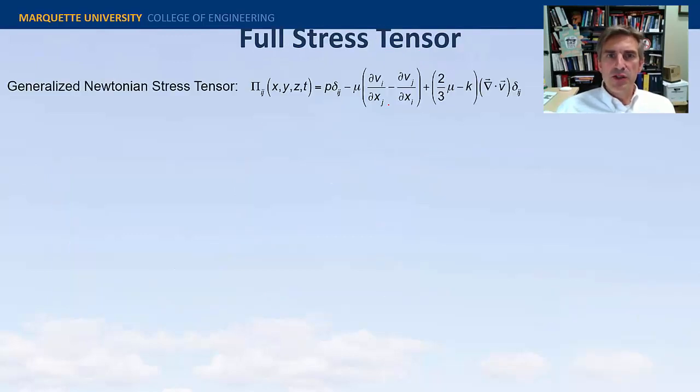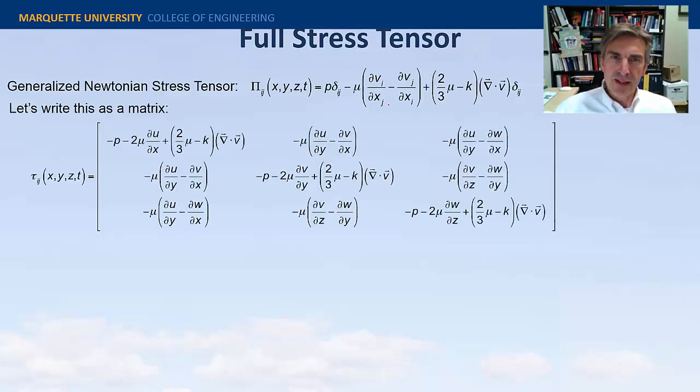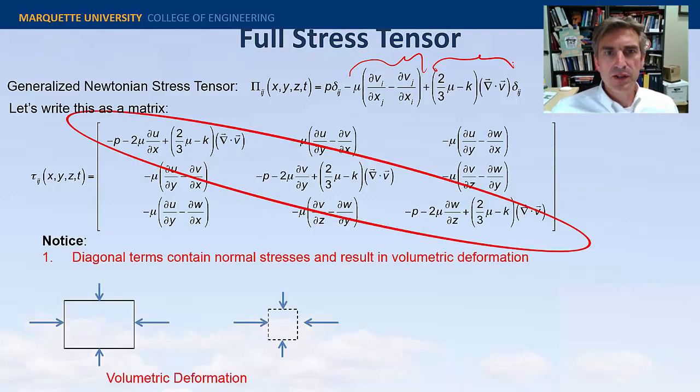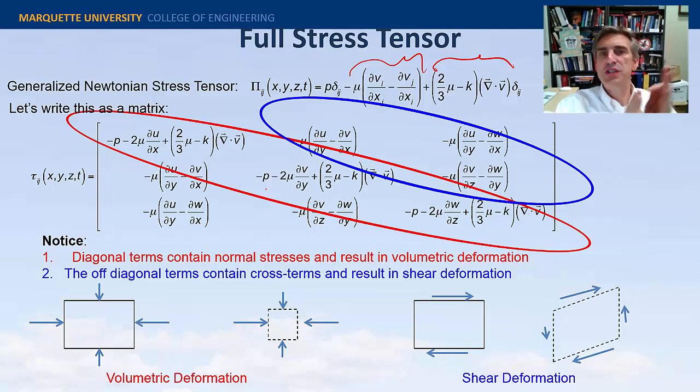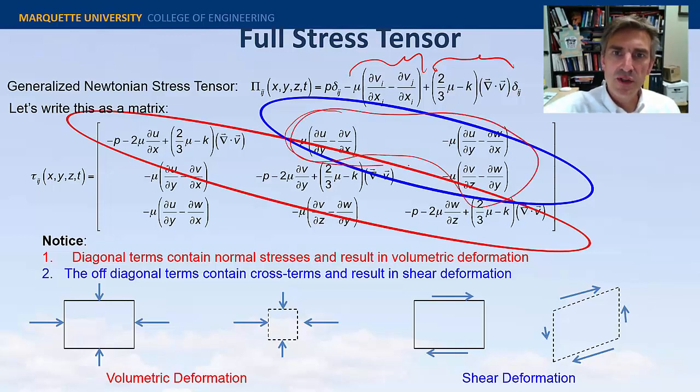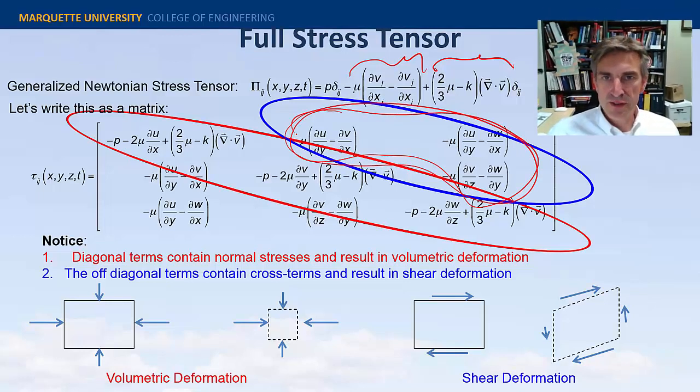This is the full stress tensor. This tensor can be written in terms of all nine components where these are related to the shear stress and these terms are related to the compression, the volumetric compression terms. So the diagonal terms are related to the volumetric deformation and the off-diagonals are related to the shear deformation. In general, when we first talk about fluid mechanics we tend to focus on these deviatoric terms or the off-diagonal terms.